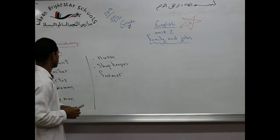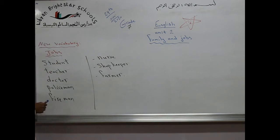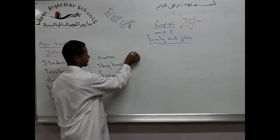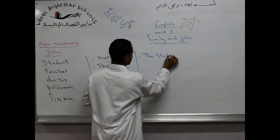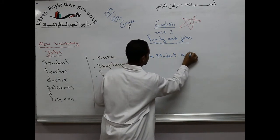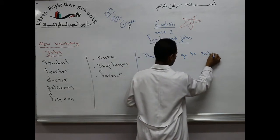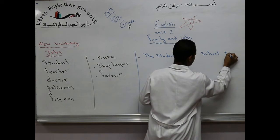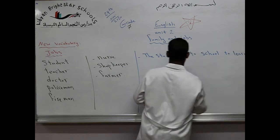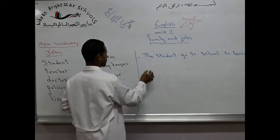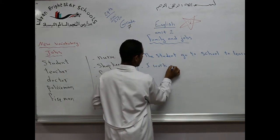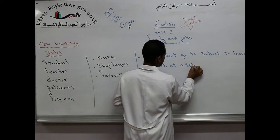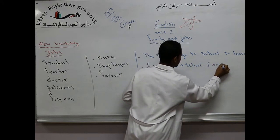And now we need to make a sentence about each job. Student, the student goes to school to learn. Teacher, I work at a school. I'm a teacher.